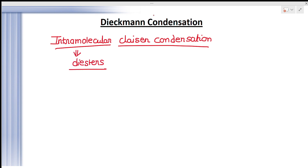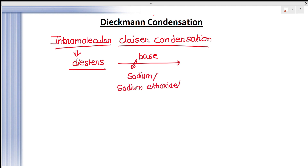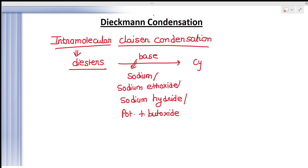This reaction is given by diesters in the presence of a base. The base may be sodium, sodium ethoxide, sodium hydride, or potassium tertiary butoxide. When these diesters are treated in the presence of such bases, they are converted to cyclic beta-ketone derivatives.